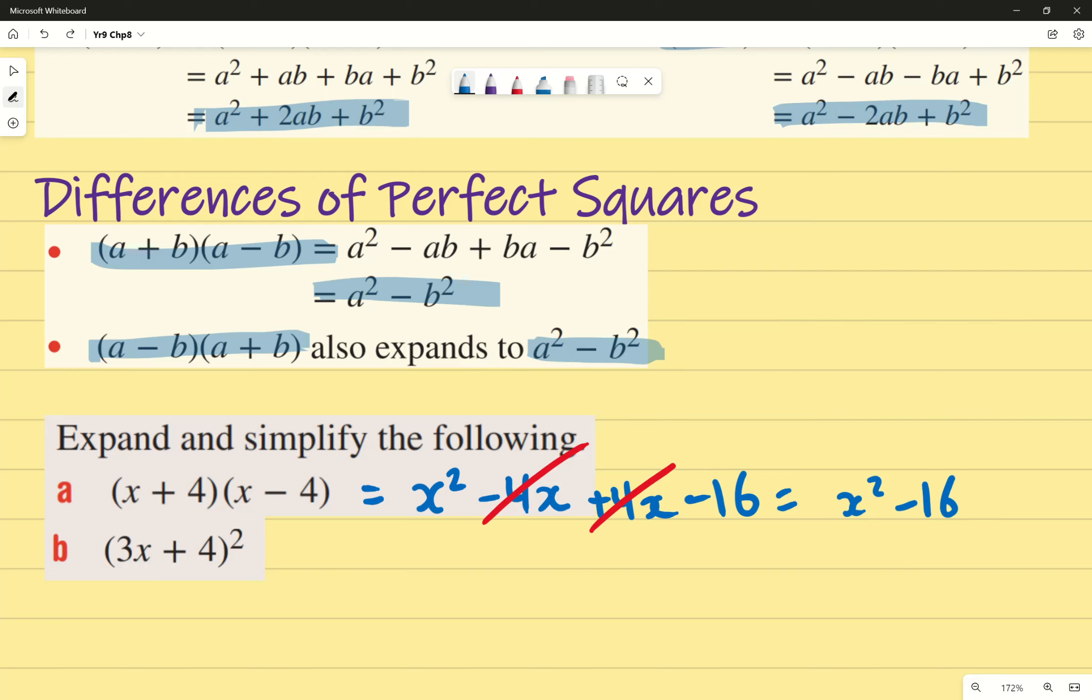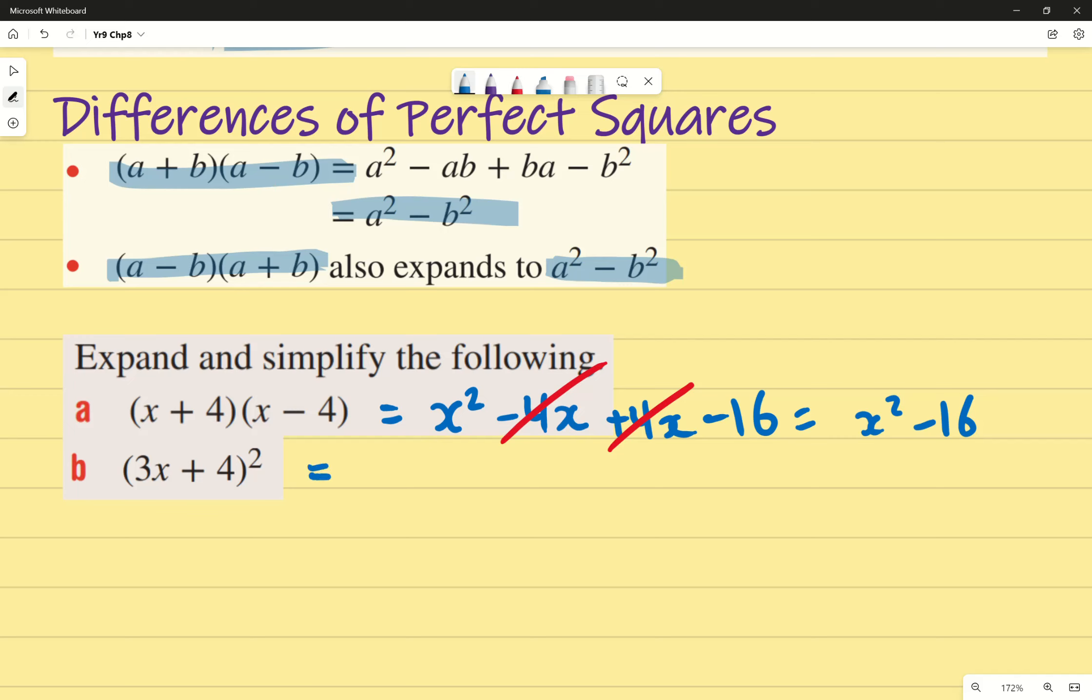Next question: expand and simplify. If I've got the square, for me I think it's a little bit hard to read, so I'll just rewrite it as (3x + 4)(3x + 4). First term is 3x multiplied by 3x. What's (3x)²? 9x² - very good, 9x². So it's 3 times 3, x times x. Outer, which is 3x times 4, which is 12x. Inner, which is again 4 times 3x, which is 12x. And the last, which is 16. Which simplifies down to 9x² + 24x + 16.